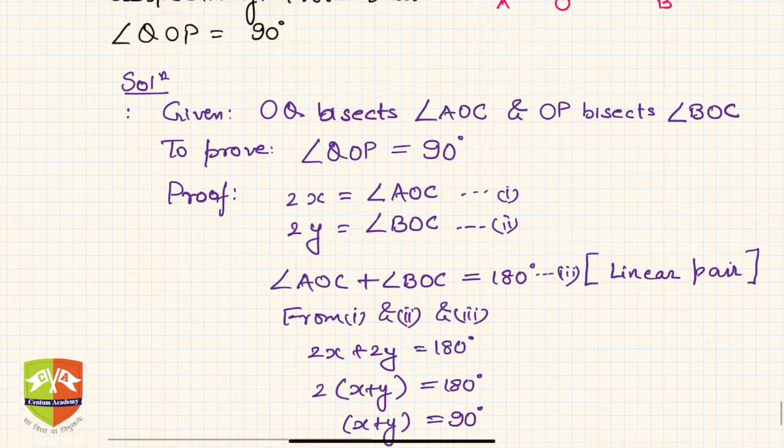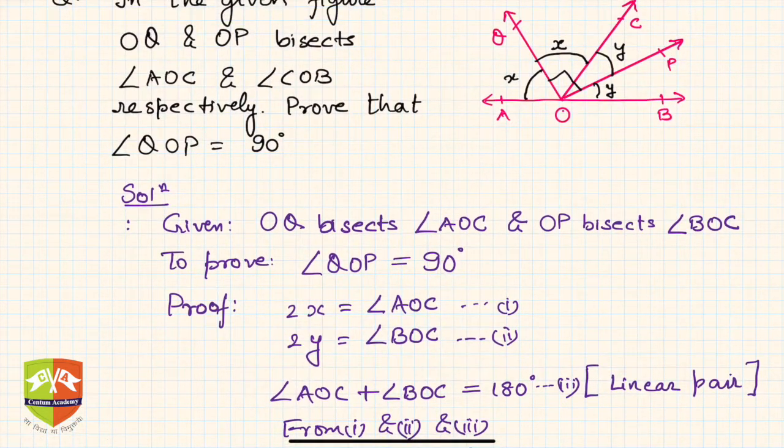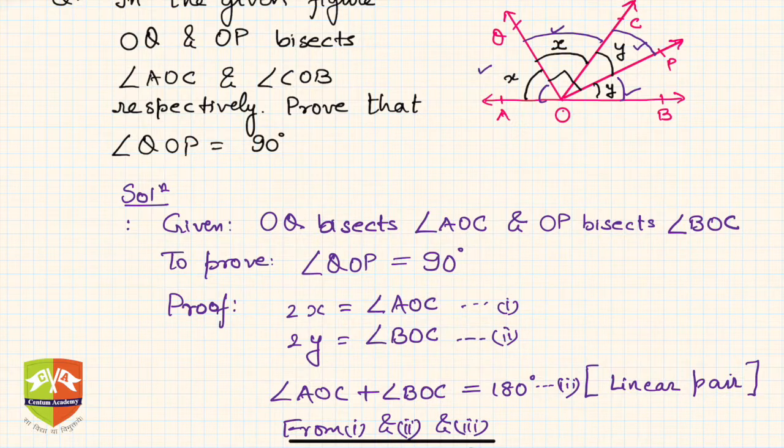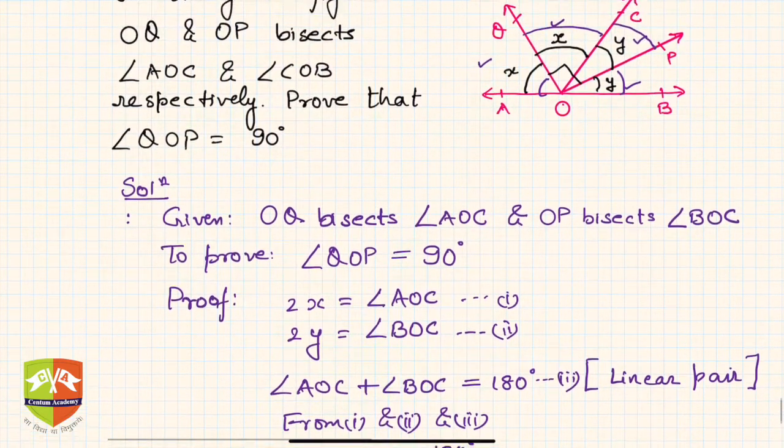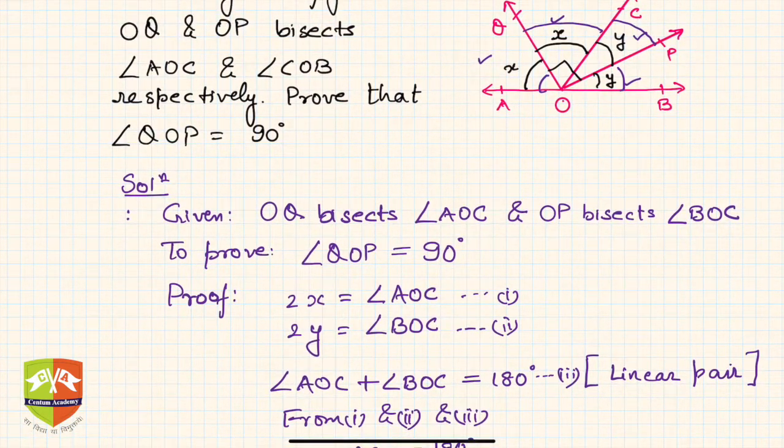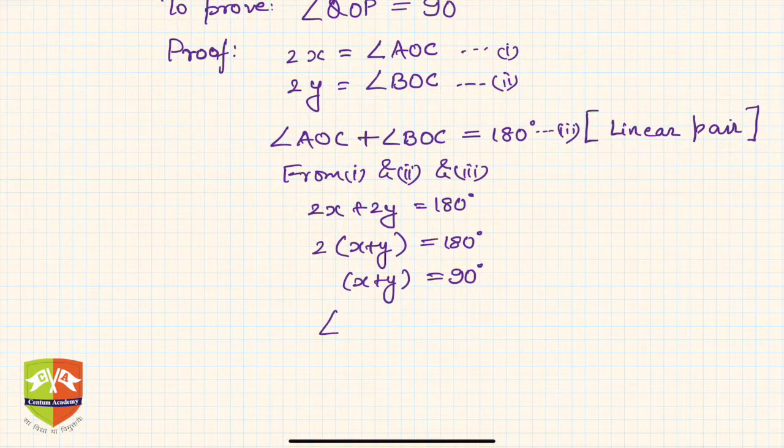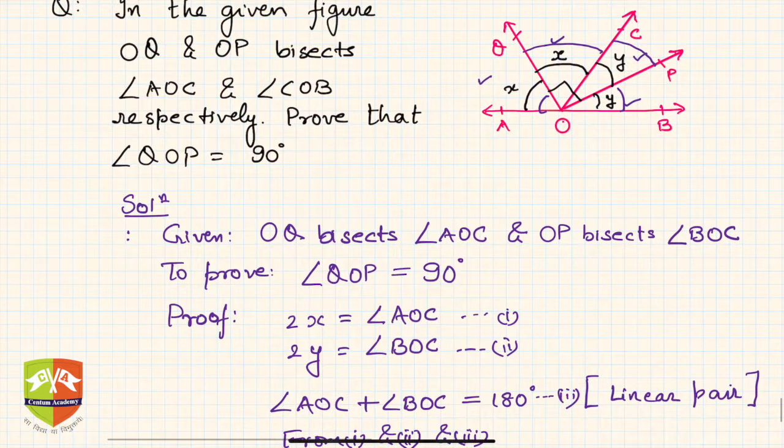Now, what is x and y? X represents one of the bisected angles, and y represents another. For x + y, we can write x as angle QOC and y as angle COP.